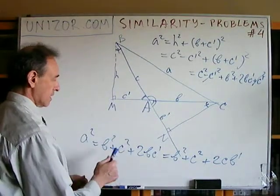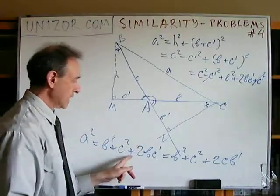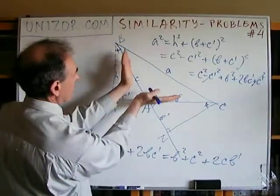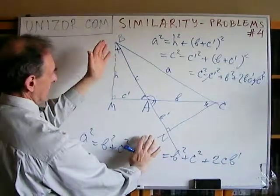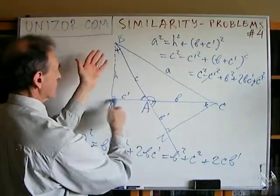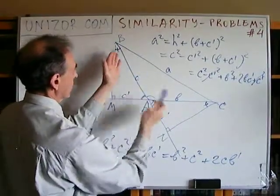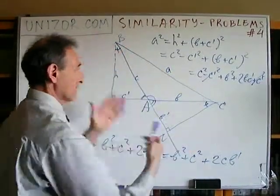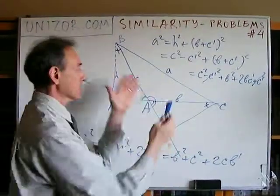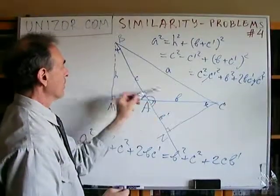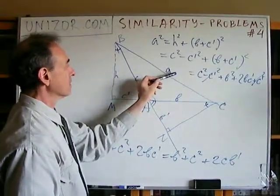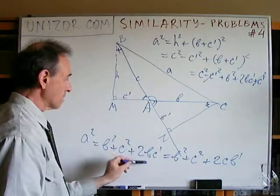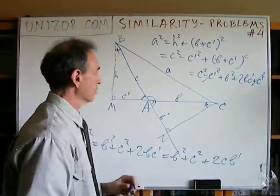The difference from the acute angle formula is just the plus sign instead of minus. Intuitively, if you have a right triangle the extra member is zero because the projection is zero. If you increase the angle over 90 degrees, that side increases, so the sum of squares of the other two sides should be smaller than A squared — you need to add this extra member to be equal to A squared. This makes intuitive sense.